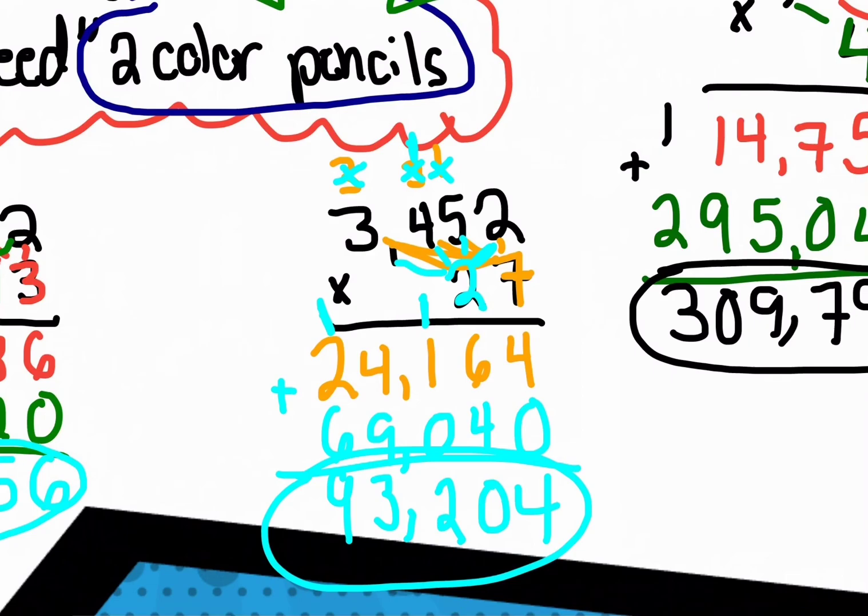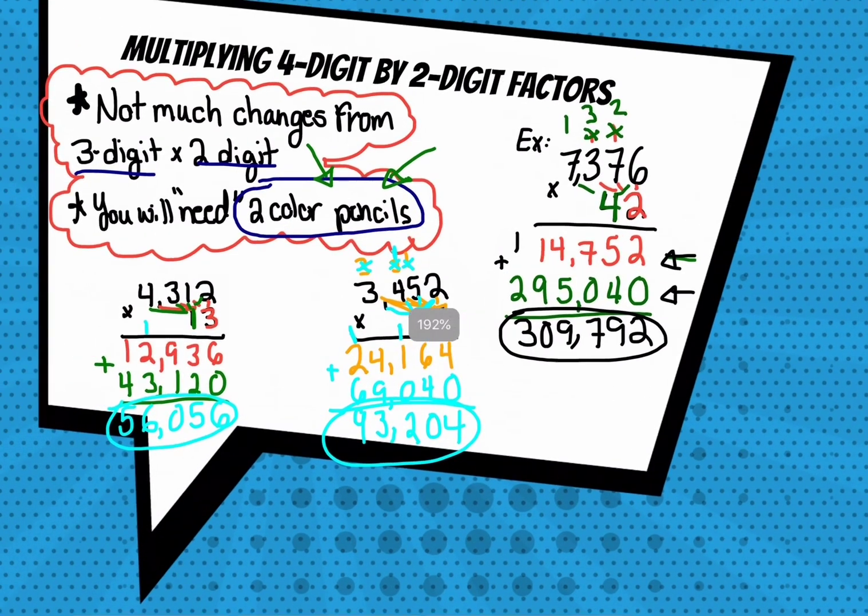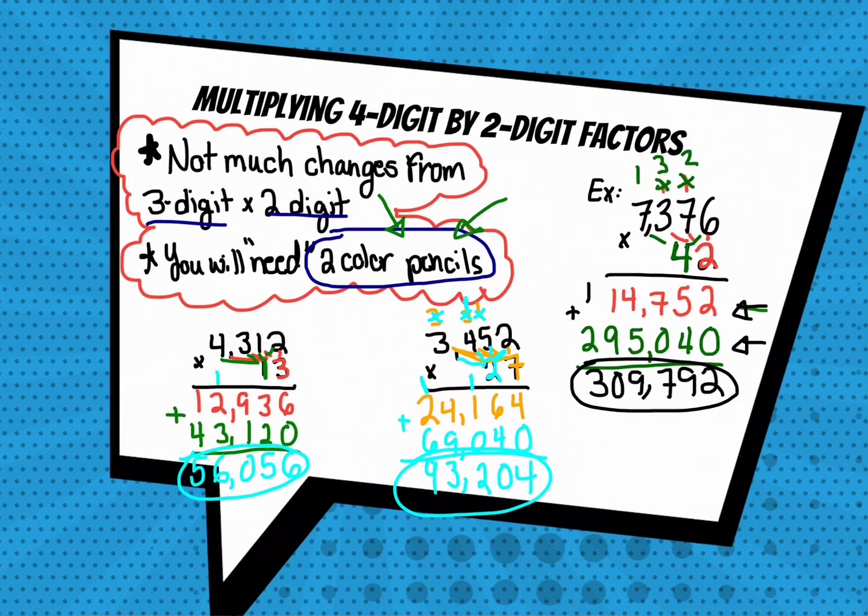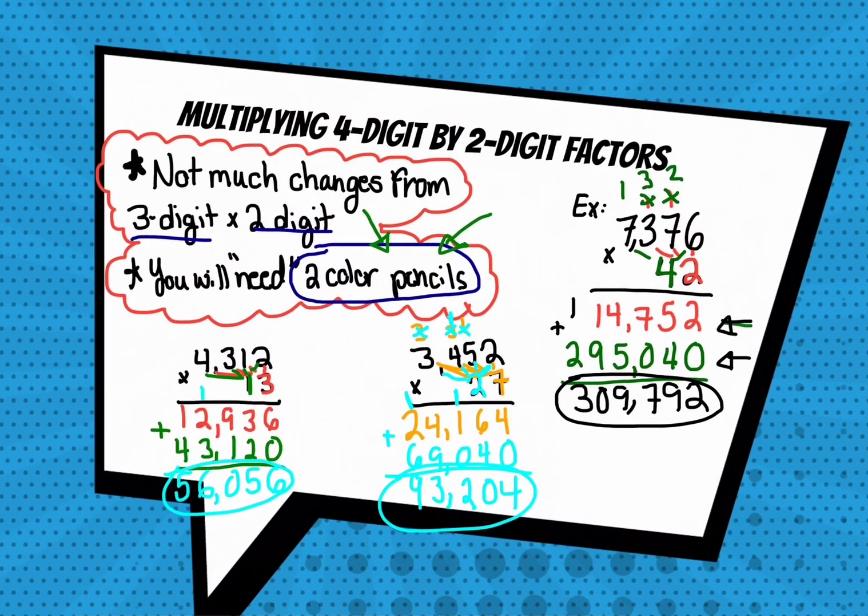So very similar to three digit by two digit multiplication, but it is a good chunk different than three digit by three digit multiplication.